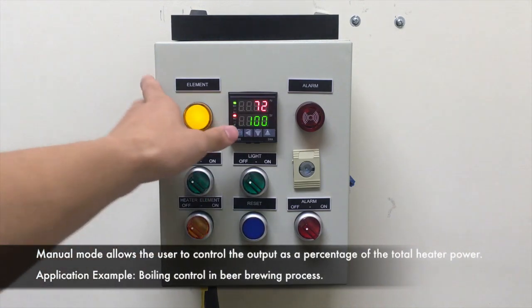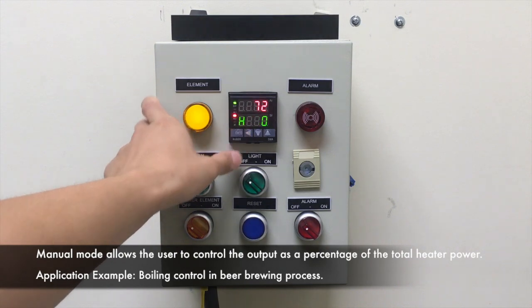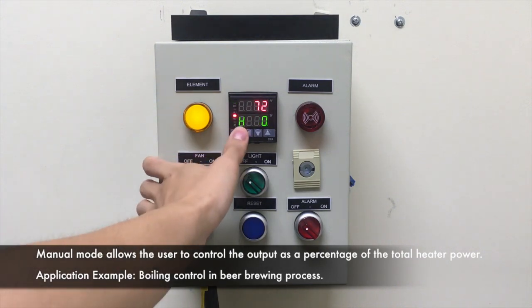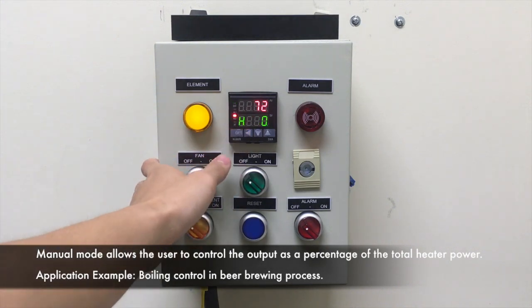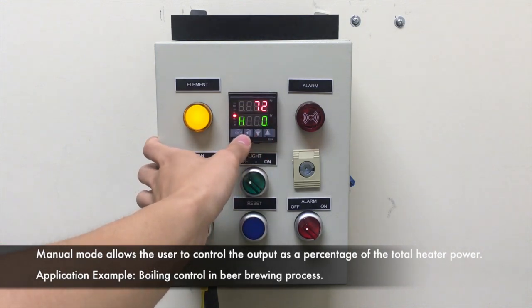Holding the left arrow key for three seconds will allow you to enter manual mode, indicated by the capital H on the bottom left. You can use the up and down arrow keys to change your power output. Click the left arrow key again to exit out of manual mode.